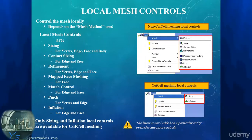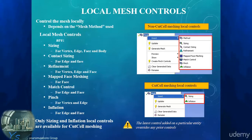The final local control is used for inflations. They can be scoped on volumes and faces or, for sweep meshes, on faces and edges. For assembly meshing, only sizing and inflations are available.